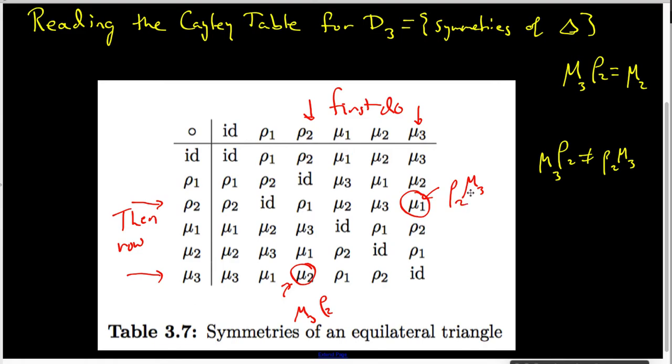So first do mu three, then do row two. This convention can be thought of in the following way in all Cayley tables where the operation is composition.